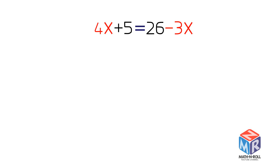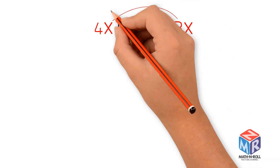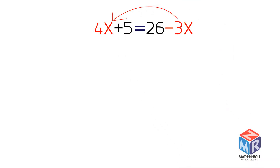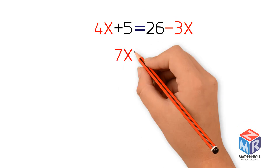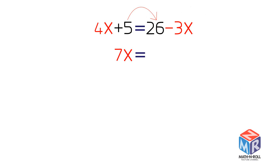Let's try another example. 4x plus 5 equals 26 minus 3x. To get the variables on one side, we move negative 3x over the equal sign — the minus sign becomes a plus sign. We immediately combine like terms: 3x plus 4x equals 7x. Now we move 5 to the other side — the plus sign becomes a minus sign. We combine like terms: 26 minus 5 equals 21. Now we divide both sides by 7. x equals 3. Did you notice how fast this method was compared to the traditional method?